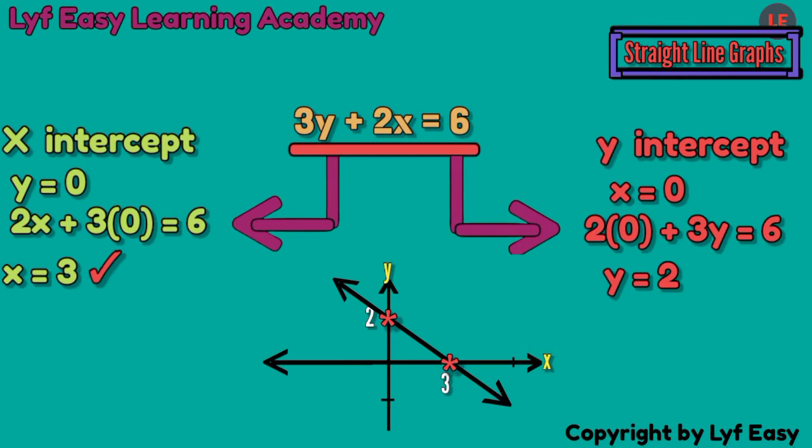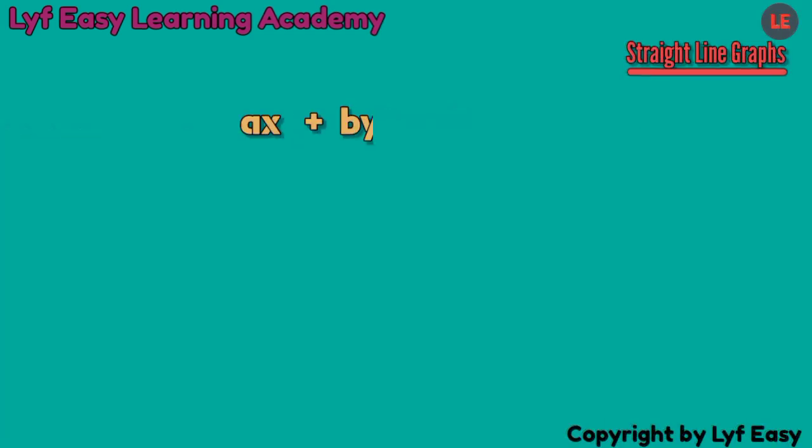Let us talk about straight-line graphs. There are a lot to know about these graphs. Firstly, the general equation for the straight-line graph is written in this form: A X plus B Y plus C equals 0.